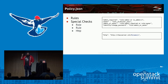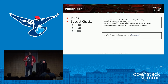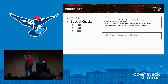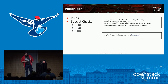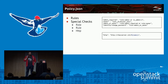For those of you who haven't seen a policy.json file yet — that is what a policy.json file looks like. It's a set of rules that denote to an API call, which then denote to a role or a user.